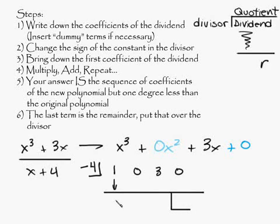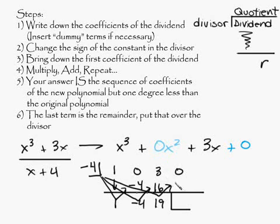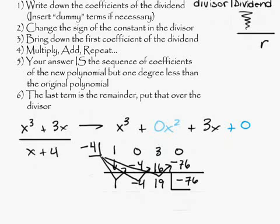Bring down the 1. Negative 4 times 1 is negative 4. And add going down. You get negative 4. Negative 4 times negative 4 is going to be 16. And 16 plus 3 is going to give you a 19. And negative 4 times a 19 gives you a negative 76. And add going down, you get negative 76. So your final answer is going to be this.